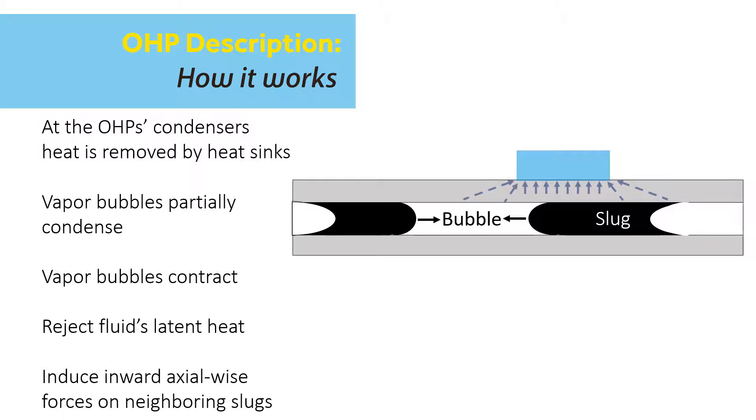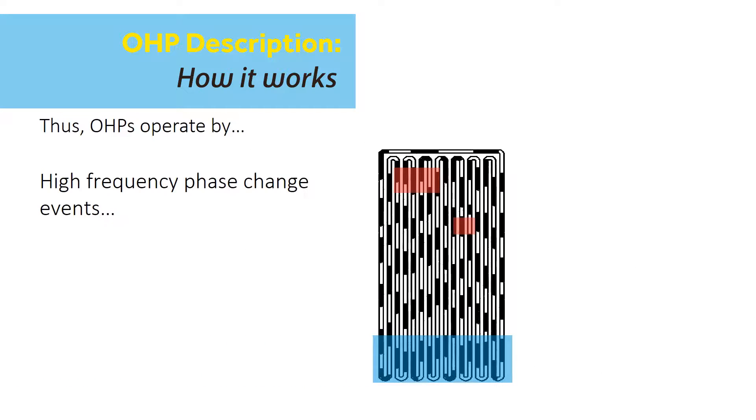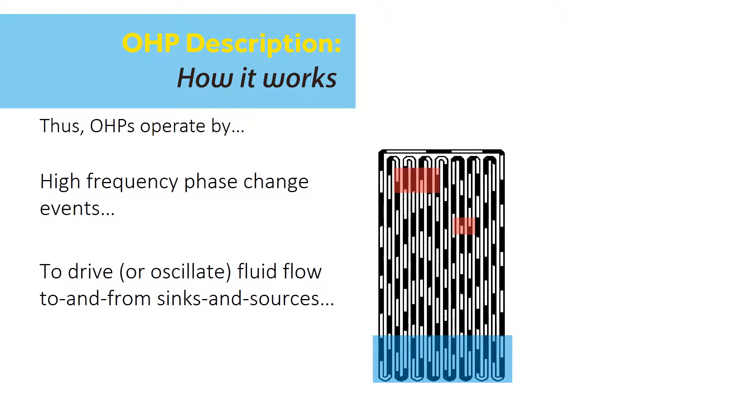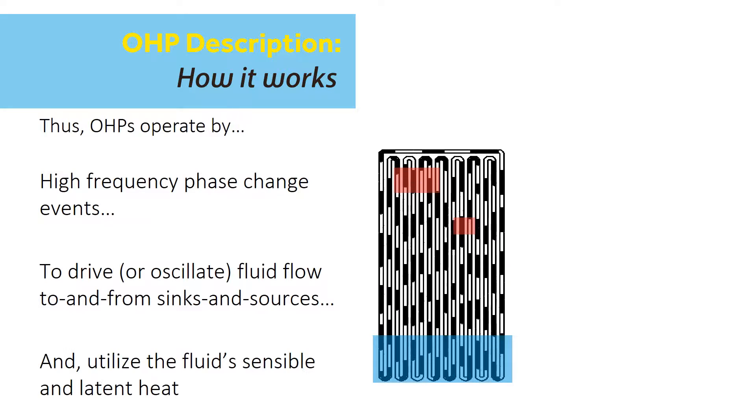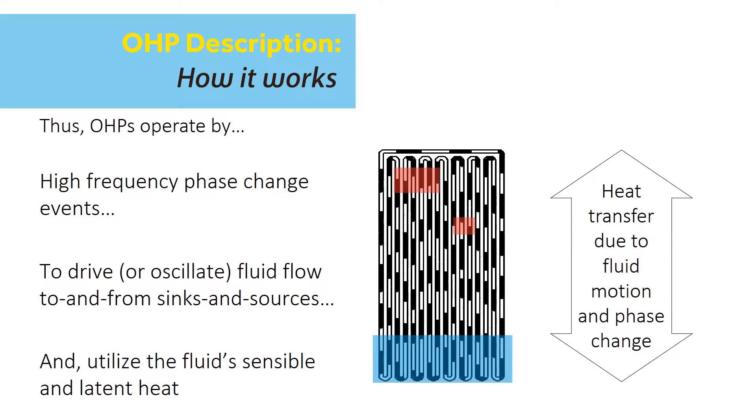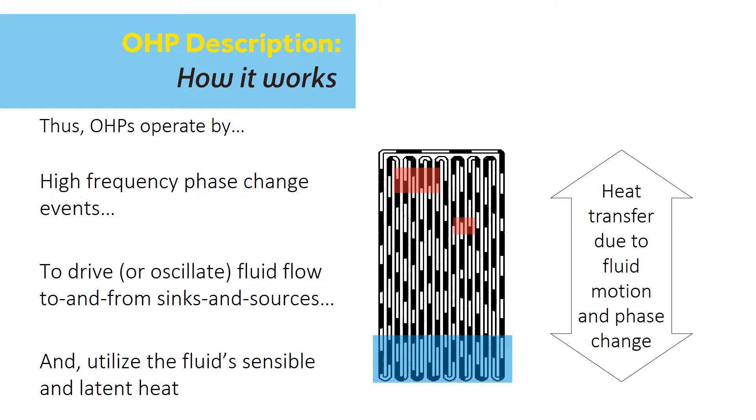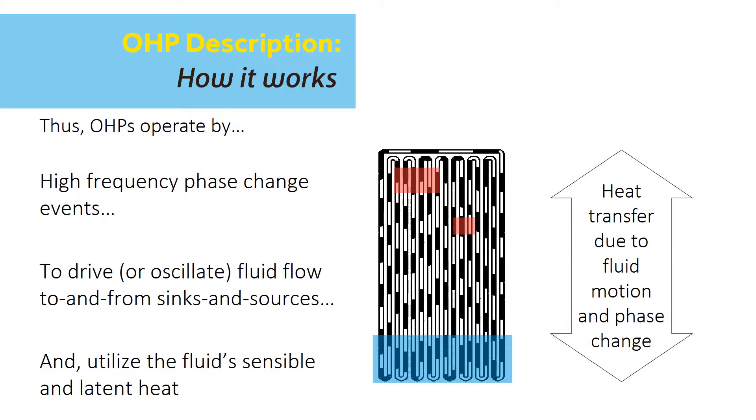High-frequency phase change events, meaning the evaporation and condensation at the heat source and heat sink, cause the chain of slugs and bubbles to rapidly move or oscillate between the heat source and heat sink surfaces. And thus, heat is transferred through the micro-channels by the fluid's sensible and latent heat.